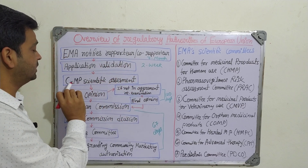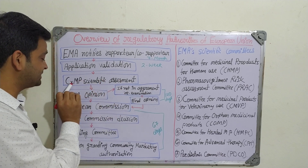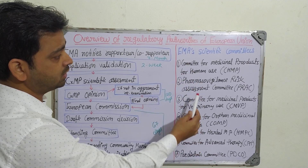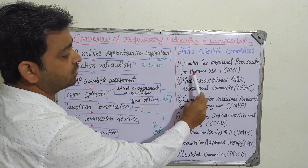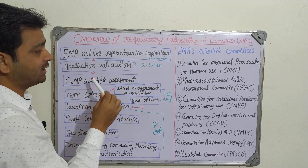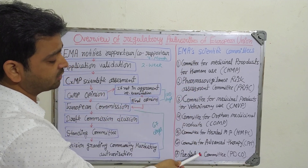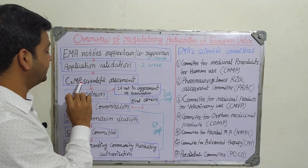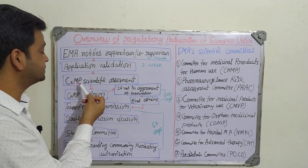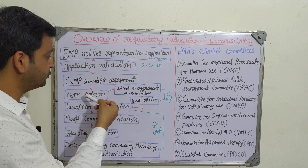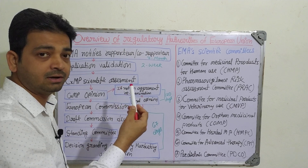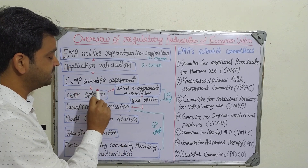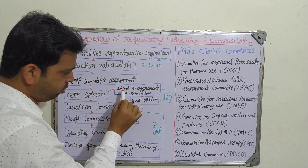Next, the application goes for CXMP scientific assessment. The 'X' represents whichever specific committee is handling the application — for example, CHMP stands for Committee for Medicinal Products for Human Use, where 'X' is 'H'. The relevant committee scientifically reviews all submitted data and evidence for the particular drug, then forms an opinion.